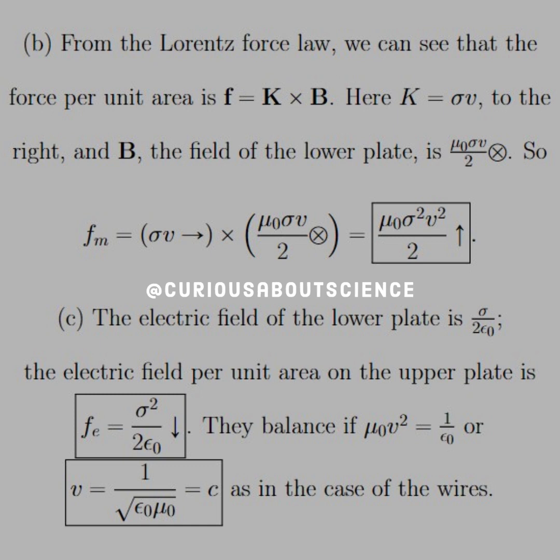Q times E is the force. So we have sigma squared divided by 2 epsilon, but it's pointing down.